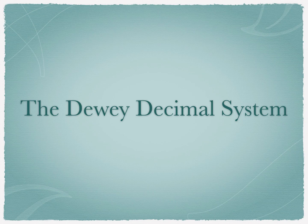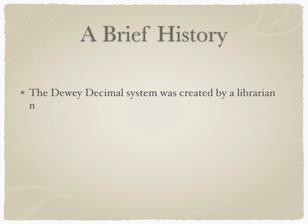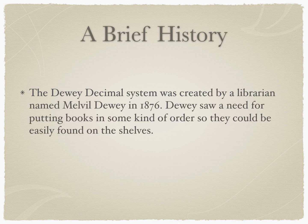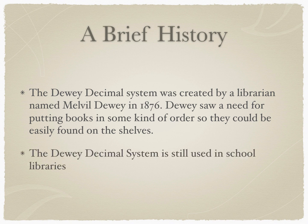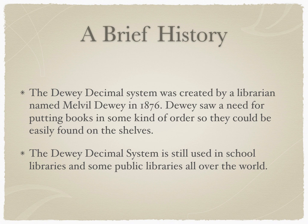The Dewey Decimal System: A Brief History. The Dewey Decimal System was created by a librarian named Melville Dewey in 1876. Dewey saw a need for putting books in some kind of order so they could be easily found on the shelves. The Dewey Decimal System is still used in school libraries and in some public libraries all over the world.